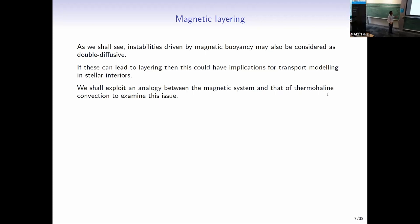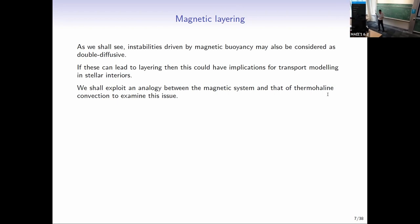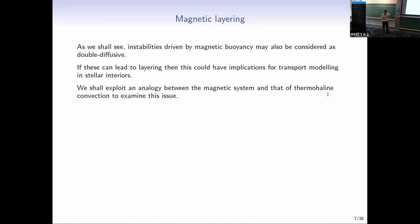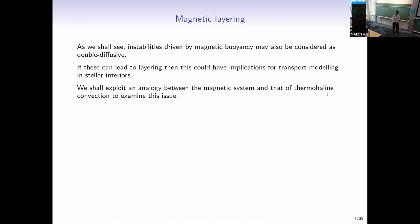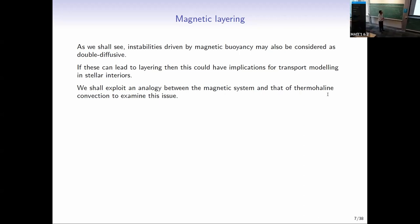Why are we bothered? Because transport — of heat or magnetic fields — is hugely affected if you have layers. In a stellar model, you can't solve the full equations; you have to parameterize the transport of heat and everything else. Whether transport occurs in a layered or non-layered state makes that parameterization number extremely different.